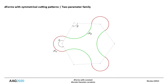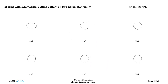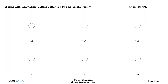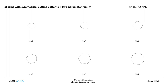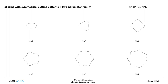The second parameter, in addition to n, is alpha, which is the opening angle of the arc A-alpha. The angle beta is not a free parameter and is defined by the Gauss-Bonnet relation. This animation illustrates the influence of the two parameters on the shape of the cutting pattern.